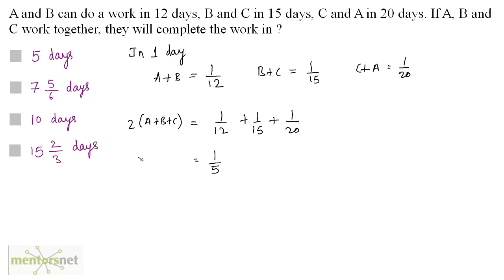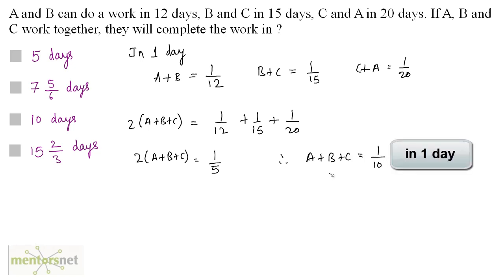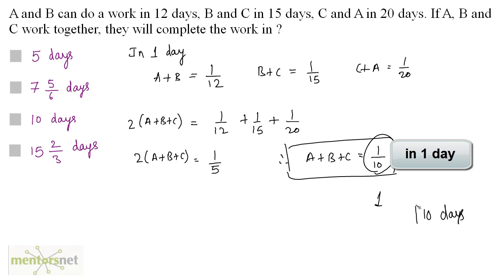On the left-hand side we have twice of A plus B plus C, therefore A plus B plus C equals 1 by 10. The total days to complete the work is the reciprocal of the fraction of work done per day, which is 10 days. So our answer is option C.